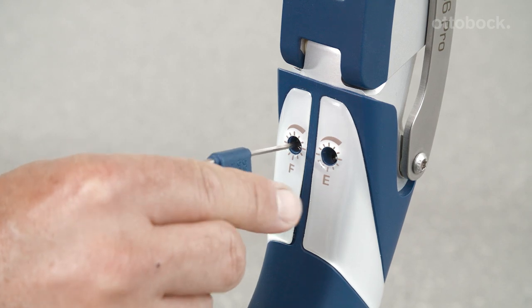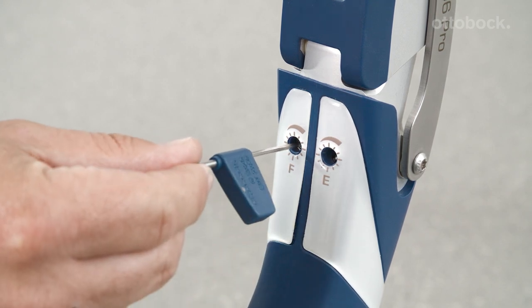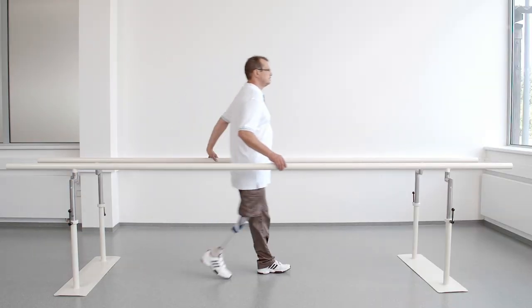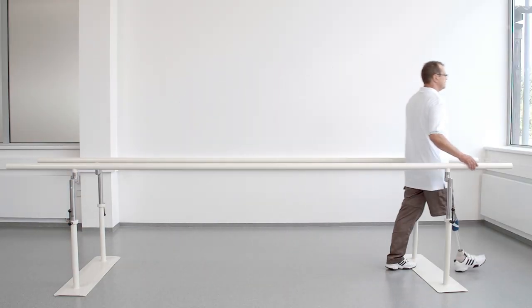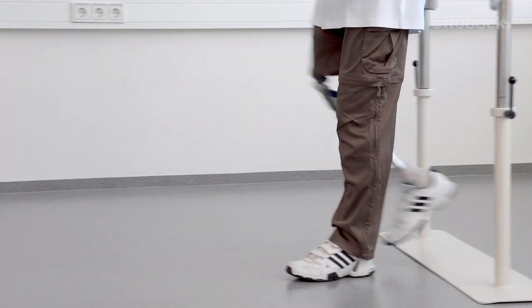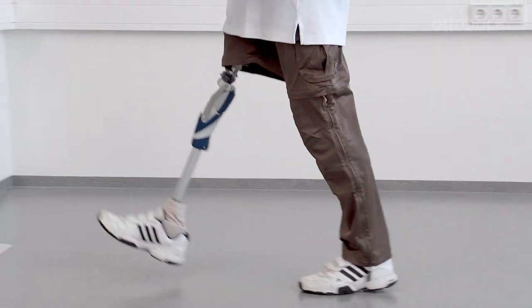The optimal setting of the damping is reached when the user doesn't have to wait for the prosthesis to reach full extension at heel strike, and the prosthesis doesn't reach its full extension too early. The knee flexion angle of the contralateral side provides a good orientation.